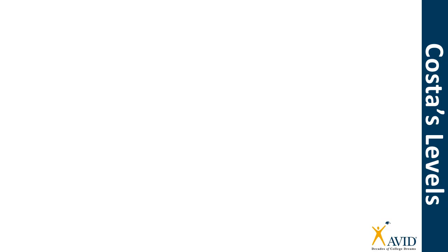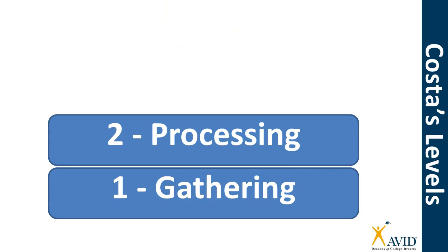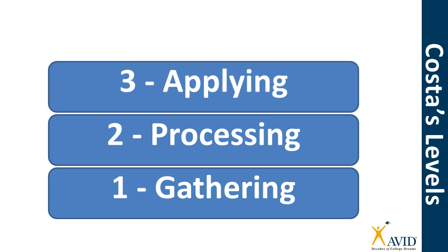We're now ready to explain the three levels that Costa identified. Level one is gathering, meaning that the learner is instructed to go and find something. Level two is processing, meaning that the learner must put some thought in in order to achieve a task. And level three is applying, meaning that the learner must take what he or she has learned and apply it to a different, more complex situation. These three levels relate to the degree of complexity of the different types of tasks — in other words, the higher the level, the more thinking that is needed for the learner to complete the task.